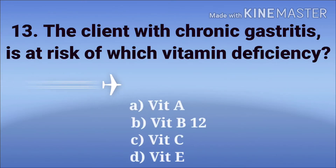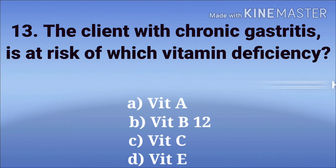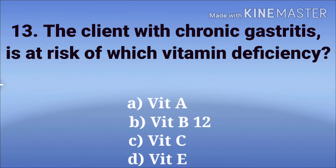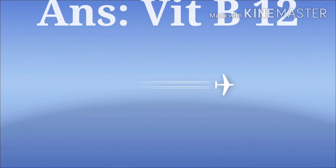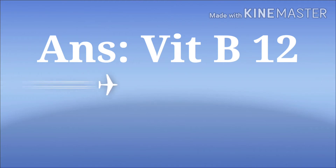The client with chronic gastritis is at risk of which vitamin deficiency? The options are vitamin A, vitamin B12, vitamin C, and vitamin E. The answer is vitamin B12. In the case of chronic gastritis, the stomach cannot properly absorb vitamin B12 because of the weakened stomach lining.